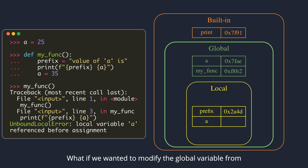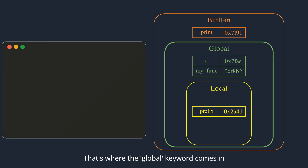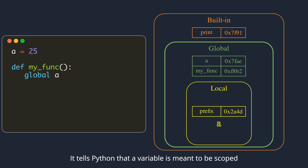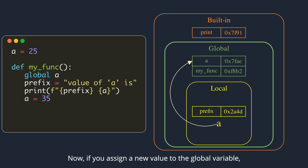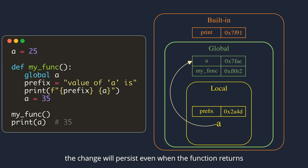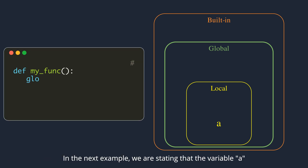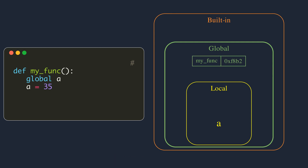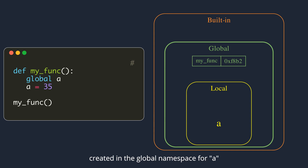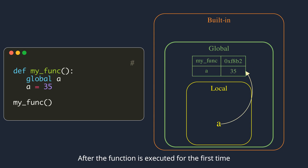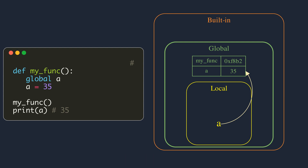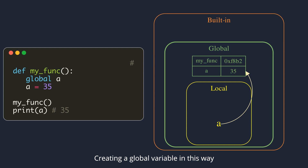What if we wanted to modify the global variable from within the function? That's where the global keyword comes in. It tells Python that a variable is meant to be scoped in the global scope. If you assign a new value to the global variable, the change will persist even when the function returns. In the next example, we are stating that variable a is global and assigning a value to it; however, there is no variable a in the global scope. When the function is executed, a new entry is created in the global namespace for a. After the function executes for the first time, this global variable will be available in the global namespace. However, just because you can doesn't mean you should — creating a global variable in this way is considered bad code.